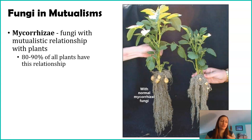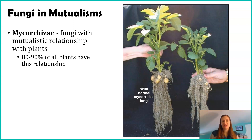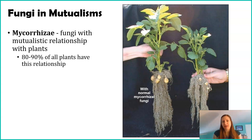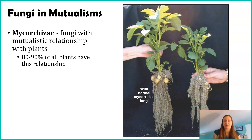This relationship is so strong and helpful — particularly for plants — that about 80 to 90% of plants on Earth have a relationship with fungi, with mycorrhizal fungi associated with their plant roots. They really need each other. It's actually hypothesized that the only reason plants were able to colonize on land was because of fungi, that they needed this relationship to get all the nutrients they needed.